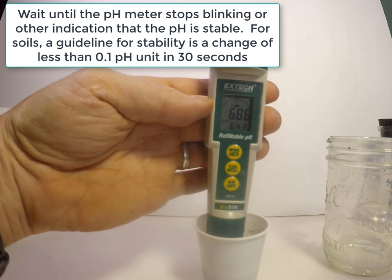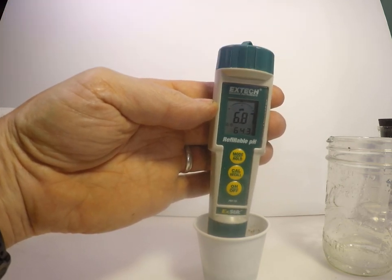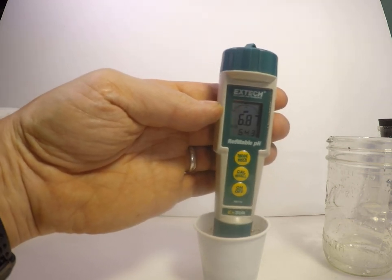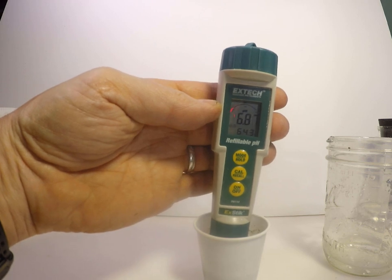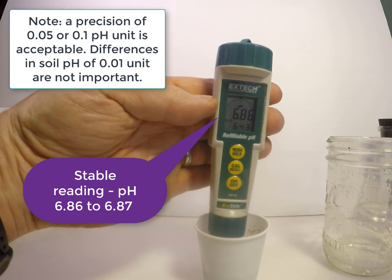Once you are satisfied that you have a stable reading, you can note the reading to the nearest 0.05 or 0.1 pH unit. In this case, we might read the pH as 6.86 or just 6.9.